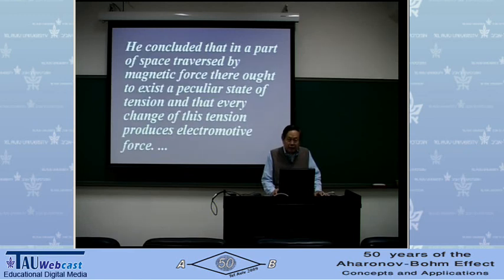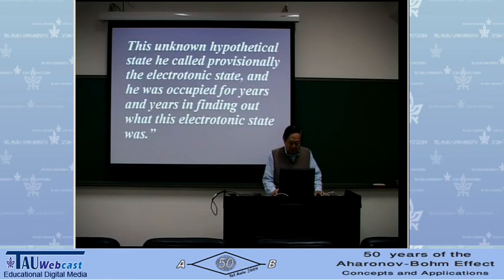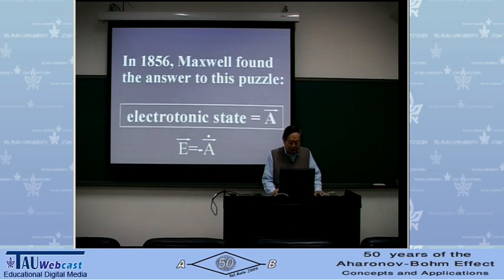Helmholtz concluded — that is, Faraday concluded — that in a part of space traversed by magnetic force, there ought to exist a peculiar state of tension. This unknown hypothetical state he called provisionally the electrotonic state, and he was occupied for years and years in finding out what this electrotonic state was. In 1856, Maxwell found the answer to this puzzle.